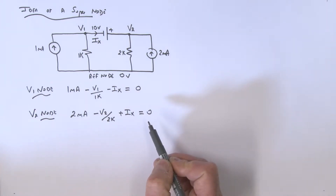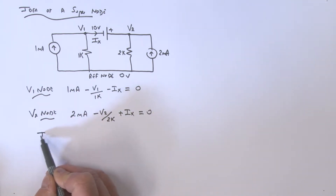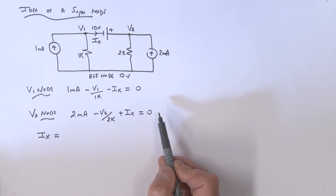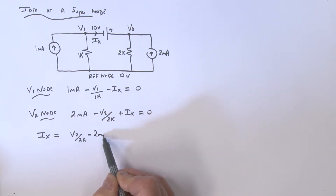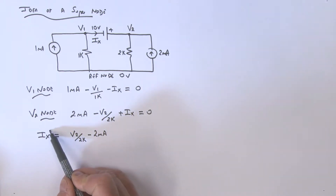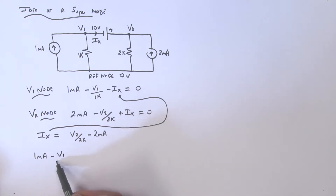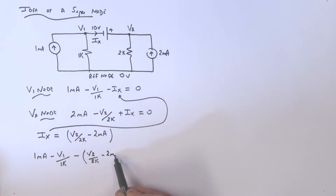Let's work on the V2 node equation and write it in terms of Ix. We can say Ix equals — taking terms to the other side — V2 over 2k minus 2 milliamps. Now we'll take that Ix and substitute it into the first equation, giving us: 1 milliamp minus V1 divided by 1k, minus the bracket of V2 over 2k minus 2 milliamps, all equal to zero.